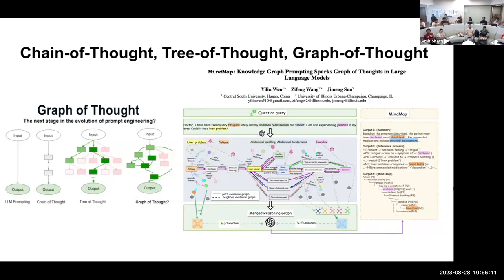Some illustrations: chain of thought can be thought of as a linear chain — how the language model constructs its thought going from input to output. In tree of thought, the thought has a tree structure. In graph of thought, it has a graph structure. The more recent paper, called Mind Map, is similar to what was discussed, where graph of thought is generic but more concrete by constraining the thought graph to be paths on an existing knowledge graph.